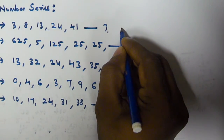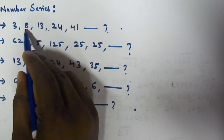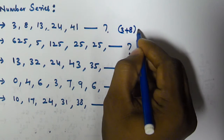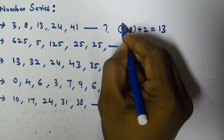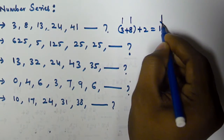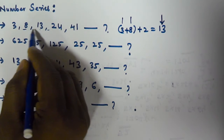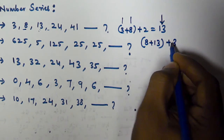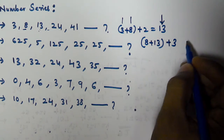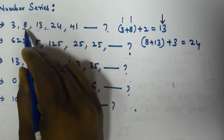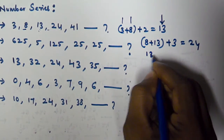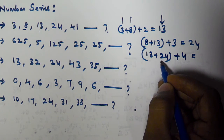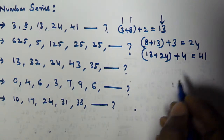So the pattern is: from the first two numbers, we generate the third number. 3 plus 8 plus 2 equals 13. This is the first number, this is the second, and this is the third generated number. Using 8 and 13, we generate 24: 8 plus 13 is 21, plus 3 is 24. Using 13 and 24, we generate 41: 13 plus 24 is 37, plus 4 is 41.